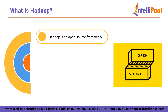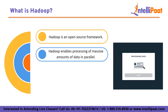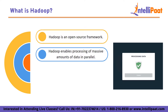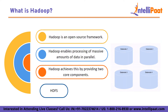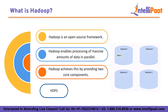The main goal of Hadoop is to enable the processing of massive amounts of data in parallel on a large cluster of commodity hardware. Hadoop achieves this by providing two core components: the Hadoop Distributed File System, or HDFS, and MapReduce.